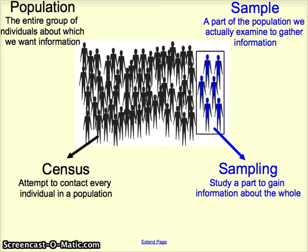The activity of pulling a subset out of the population is called sampling. There are many methods for doing sampling that we'll talk about in another video, but the key idea is studying part of the population to gather information on the whole. We want to do that well, and we'll talk about how in another video.